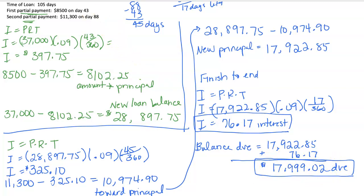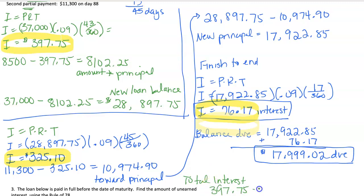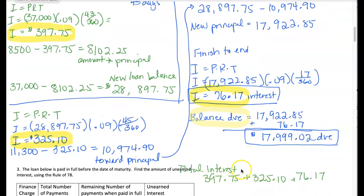The last part of the question says find the total interest. I'm just going to highlight here all the interest payments. There were three of them. One, two, and then this third one at the end. So adding up our total interest, we're going to have the $397.75, $325.10, and also $76.17. And that gives us a total interest of $799.02. So the two parts we were asked was the balance due and there's just under $18,000 still due on the loan after those two payments. And then there's a total interest for the whole life of the loan of not quite $800.